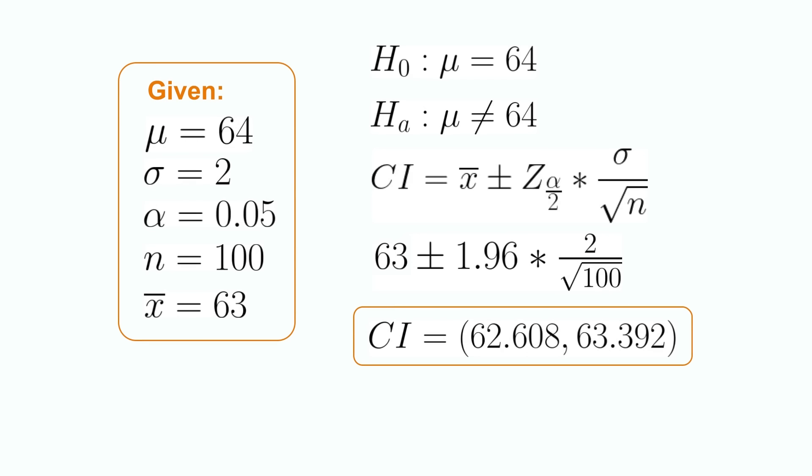The first step in tackling this problem is to determine what direction the alternative hypothesis is in: left-tailed, right-tailed, or two-tailed. Because the phrase 'is not' is contained in the problem, we can see that we will be using a two-tailed hypothesis test. We were also told that our alpha level is 0.05, so we know that we will be using a 95% confidence interval. Next, we need to decide what confidence interval formula to use. Because the problem states that sigma is known, we will be using the confidence interval formula for the population mean when sigma is known.